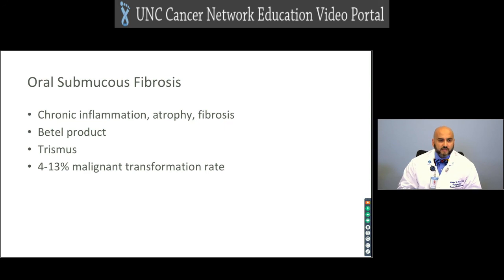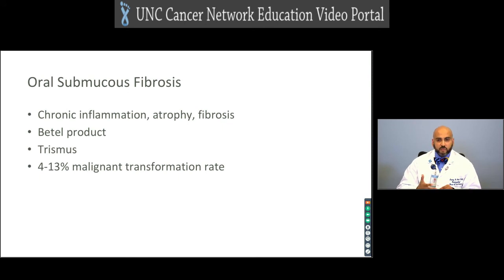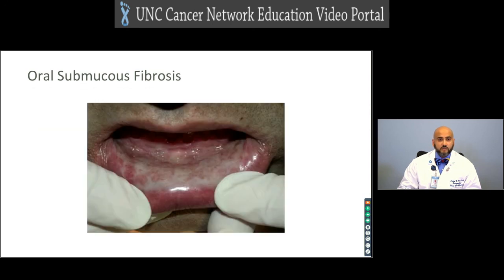Oral submucosal fibrosis is more rare in North Carolina — it involves chronic inflammation, atrophy, and fibrosis of the epithelial lining, and is related to betel nut, which is a carcinogen. In the Indian population, the betel nut is wrapped with a betel leaf along with some tobacco. Patients present with significant trismus, which can make diagnosis very difficult if there is malignant transformation. The transformation rate is anywhere from 4–13%, and it is usually bilateral on the buccal mucosa.